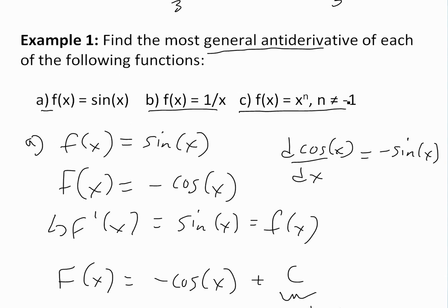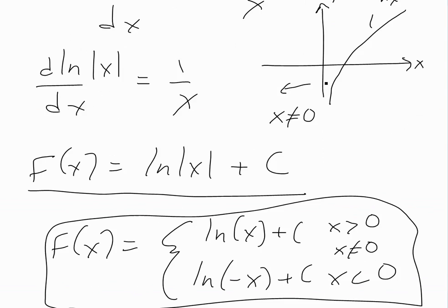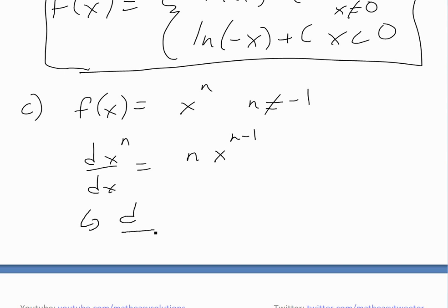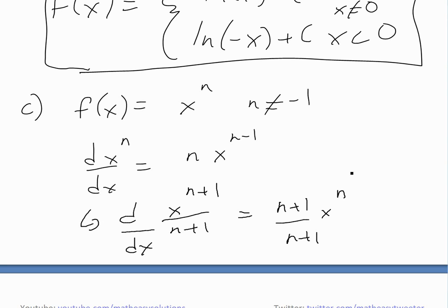Now part c: f(x) = x^n, where n ≠ −1, because if n = −1, that would just be 1/x, which is the ln case. Here we use the power rule. Recall that d/dx[x^n] = n·x^(n−1). We need to reverse this. It turns out the antiderivative is d/dx[x^(n+1) / (n+1)], because taking the derivative brings down (n+1), which cancels with the denominator, leaving x^n.